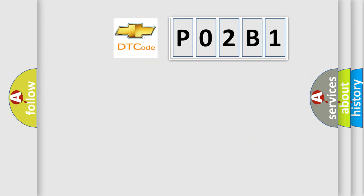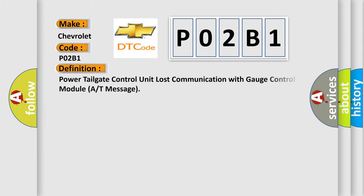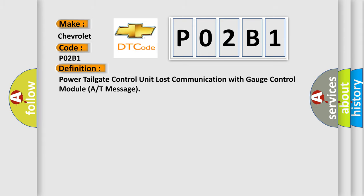The number itself does not make sense to us if we cannot assign information about what it actually expresses. So, what does the diagnostic trouble code P02B1 interpret specifically for Chevrolet? The basic definition is: Power tailgate control unit lost communication with gauge control module A or T message.